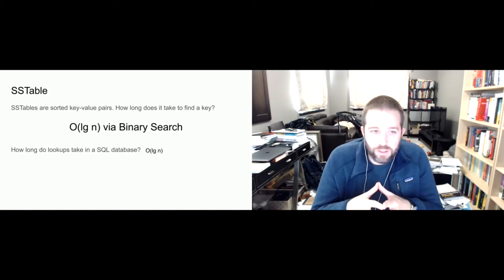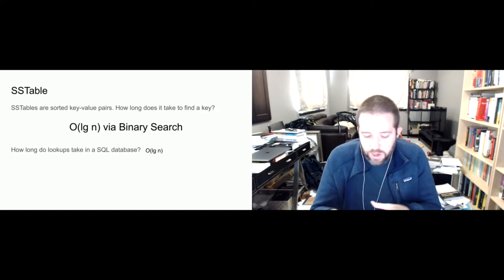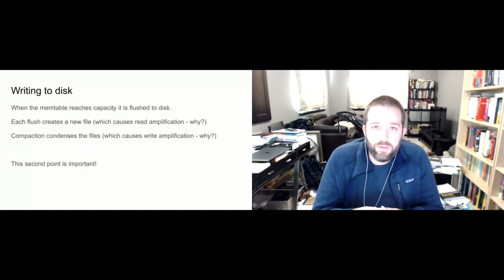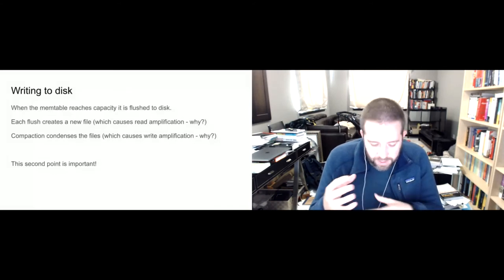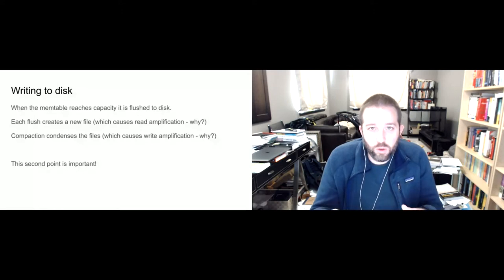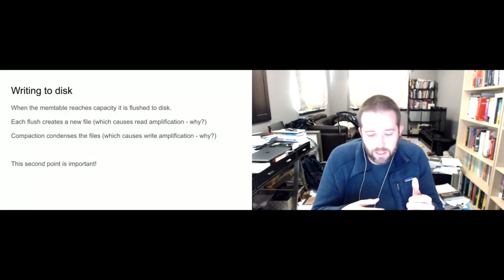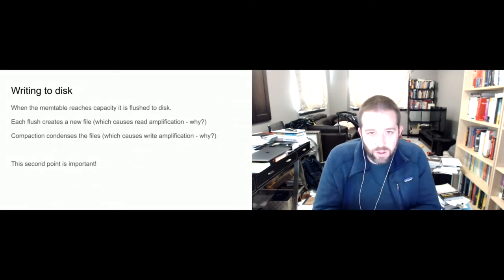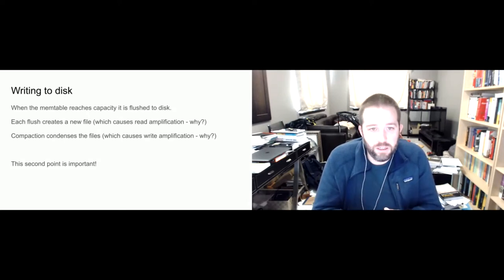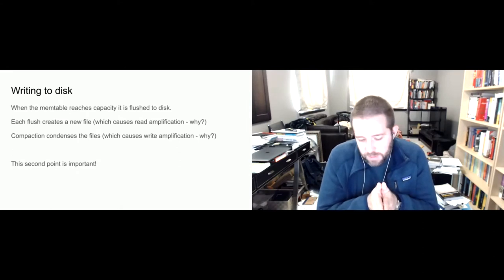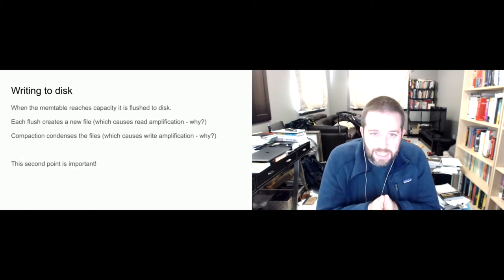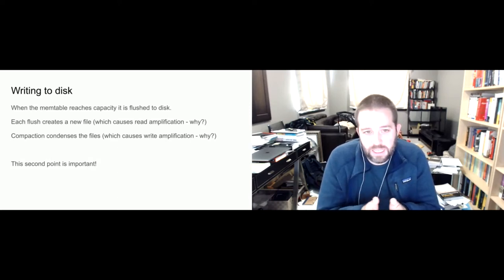When the mem table reaches some capacity, it's flushed to disk, and this creates a new file. This is what causes read amplification. As our mem table keeps getting flushed, files start to accumulate on disk. Since the flushing happens because the mem table reaches its maximum capacity, the files on disk likely contain different values — there's no guaranteed overlap. So when reading, if we don't find a key in one file, we need to search the others, because it's possible that specific file doesn't have the key but another does.